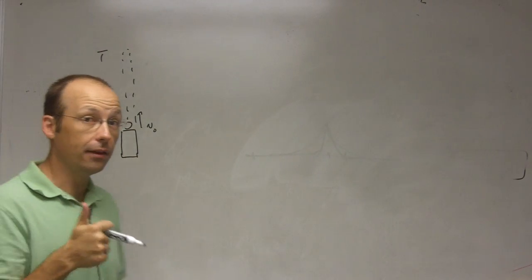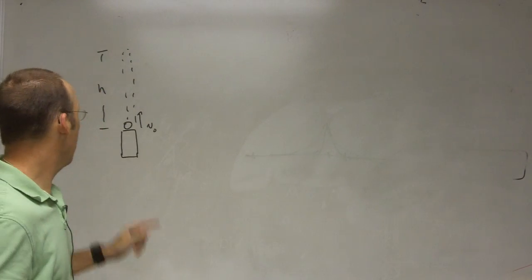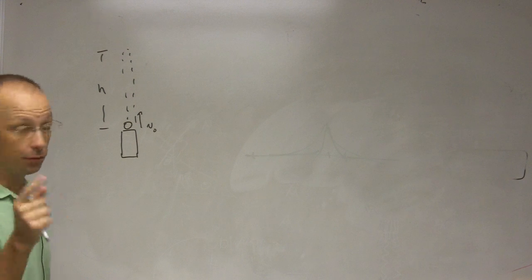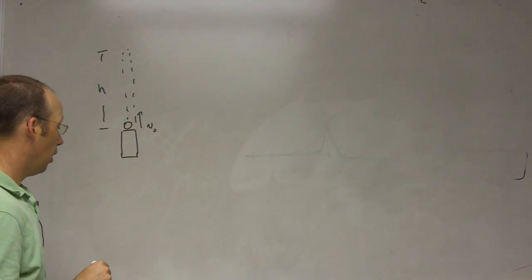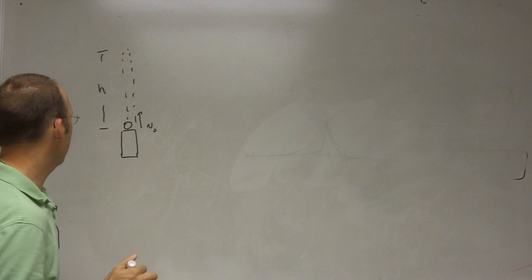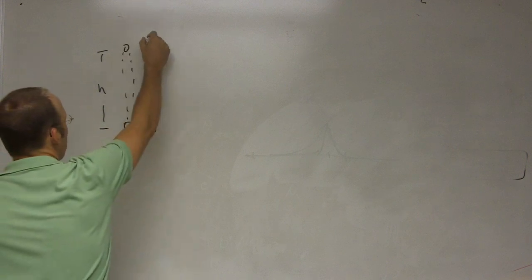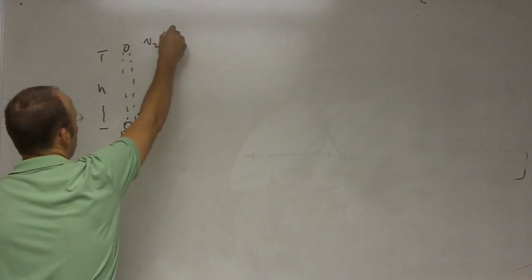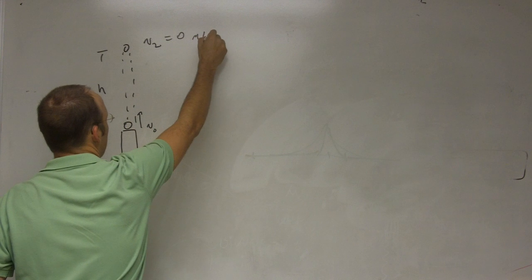So if I measure just the height, how would I find out how fast it was going, this initial velocity v0? Well, I know the first thing. Up here, the velocity, I'll call it v2, is 0 meters per second. It stopped.